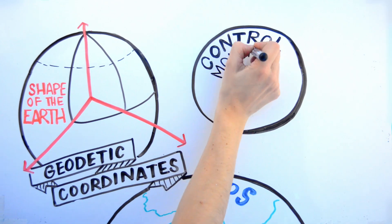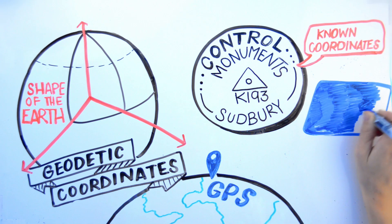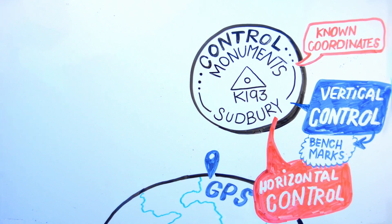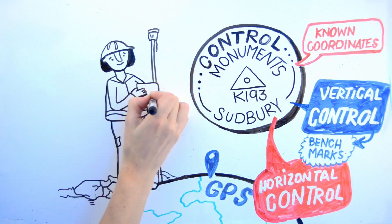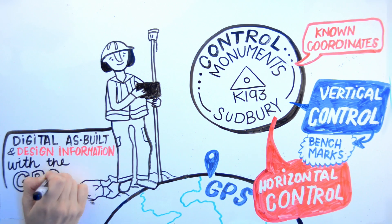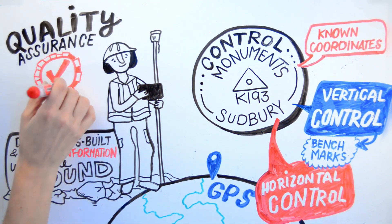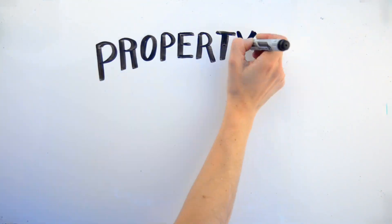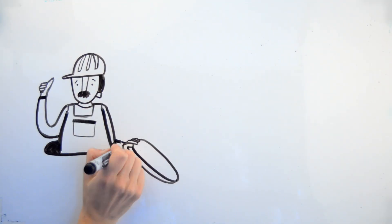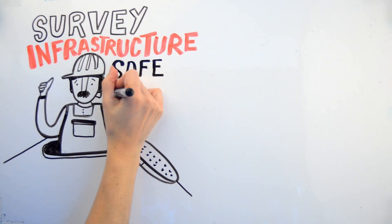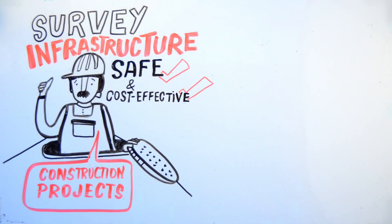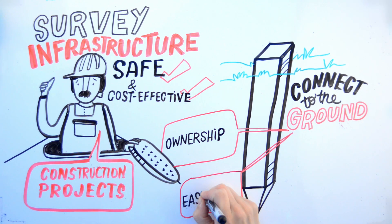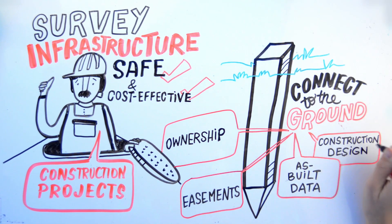Control monuments have known geodetic coordinates — horizontal control for location, and vertical control known as benchmarks for elevation. Control monuments both connect digital as-built and design information with the ground and provide quality assurance for the GPS equipment used in layout and machine navigation. Property monuments and control monuments provide the survey infrastructure indispensable to safe and cost-effective construction projects. Stable long-term property and control monuments physically connect ownership, easements, as-built data, and construction design to the ground.